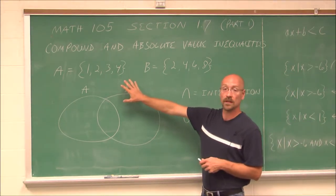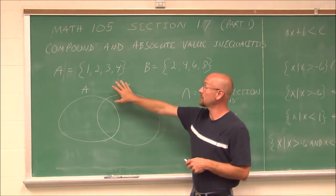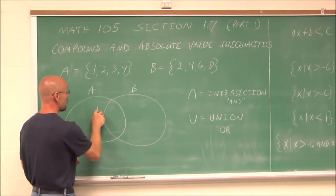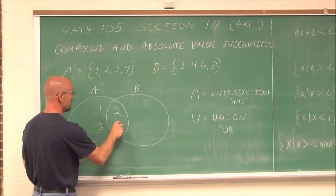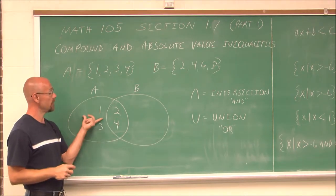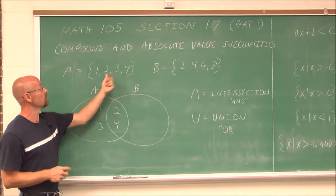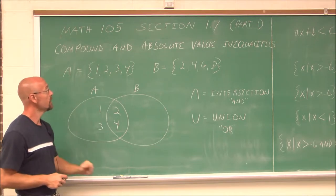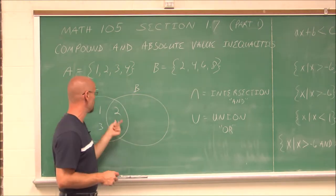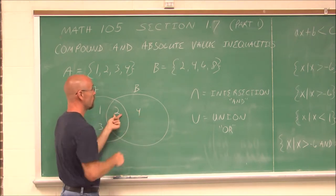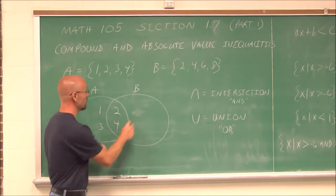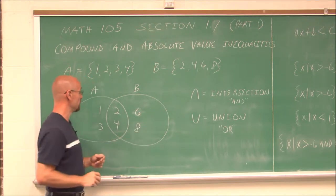If we have two sets of numbers, in set A we have the values 1, 2, 3, and 4. So this is the set of values for A: 1, 2, 3, and 4. In the set B, we have 2, 4, 6, and 8.